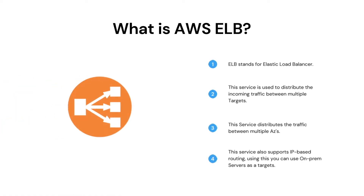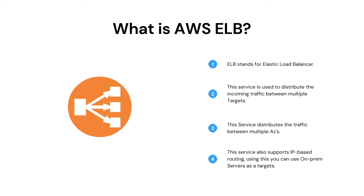Our first question is: What is AWS ELB? A load balancer distributes workloads across multiple computer resources, such as virtual servers. Using a load balancer increases the availability and fault tolerance of your applications. You can add and remove computer resources from your load balancer as your needs change, without disrupting the overall flow of requests to your applications. You can configure health checks, which monitor the health of the compute resources so that the load balancer sends requests only to the healthy ones. You can also offload the work of encryption and decryption to your load balancer so that your compute resources can focus on their main work.